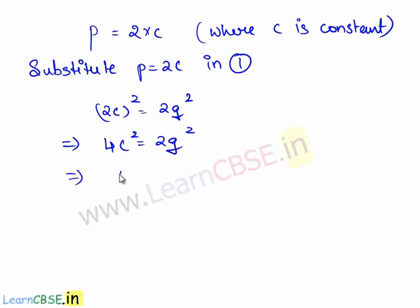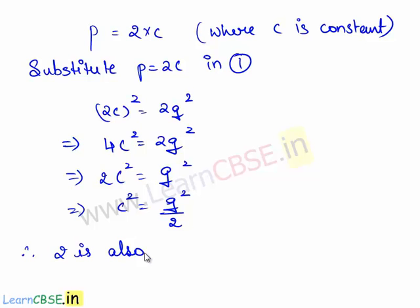This gives 2c square is equal to q square. So this expression can be written as c square is equal to q square by 2. From this expression, we see that 2 divides q square, which also implies that 2 divides q. Therefore, 2 is also a factor of q.